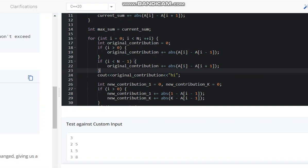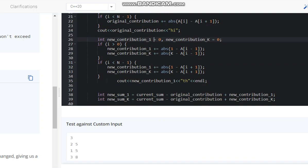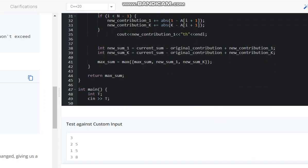And if it is the element at the last, then it would go with this loop. So similarly we are calculating the contributions and then taking the sum and calculating the maximum.